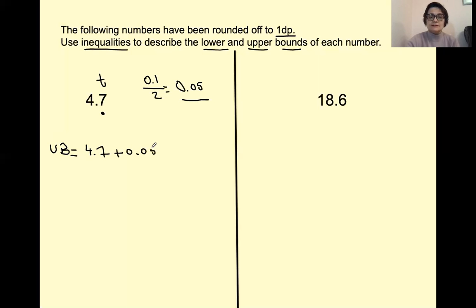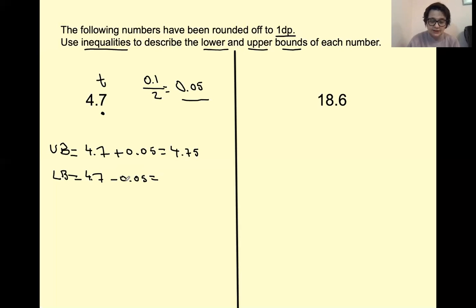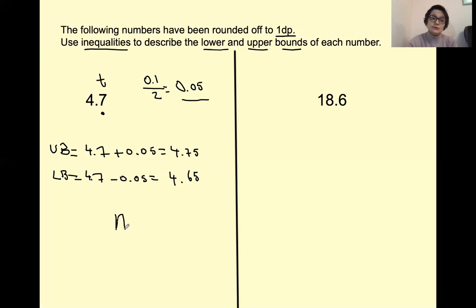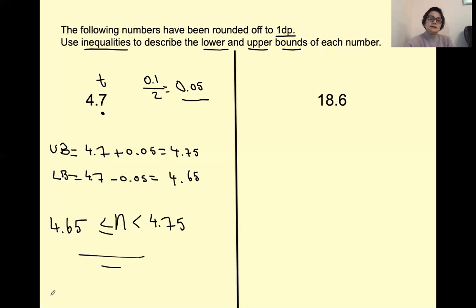4.7 plus 0.05, and the answer is going to be 4.75 — this is the upper bound. For the lower bound, it is 4.7 take away 0.05. You can use a calculator: 4.7 take away 0.05, and the answer is going to be 4.65. So our numbers are going to be in this limit: smaller than the upper bound 4.75, and greater than or equal to 4.65. This is the inequality for this question. The next question asks us to do exactly the same thing with 18.6.